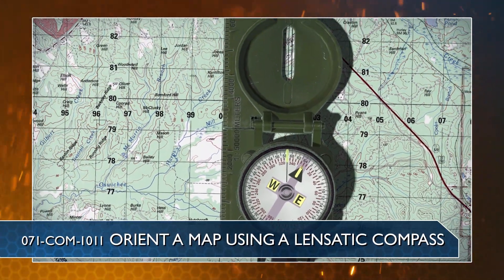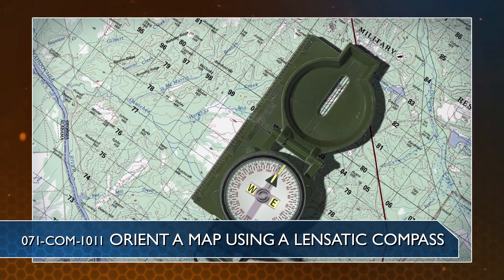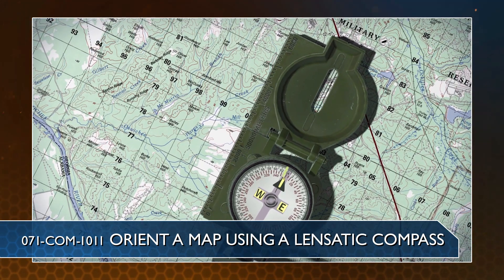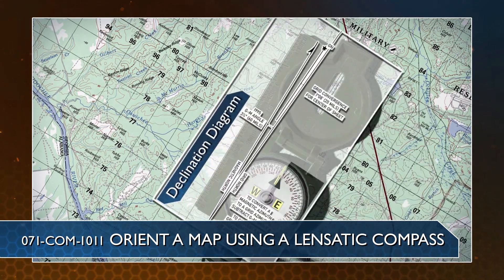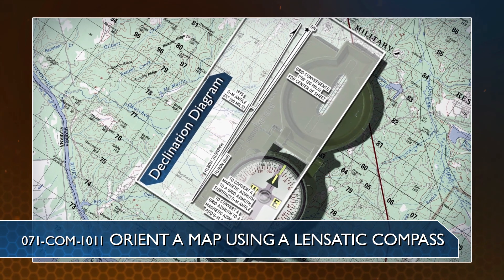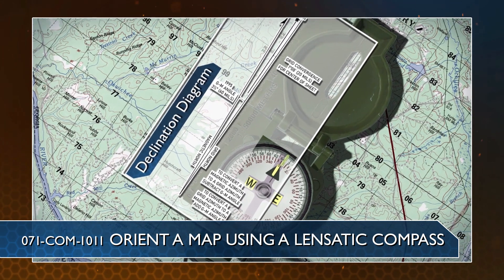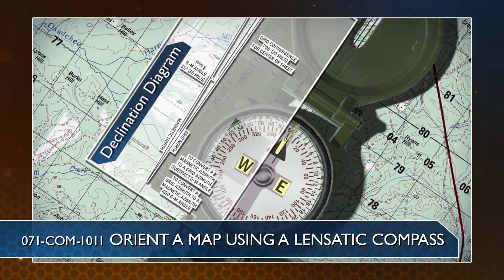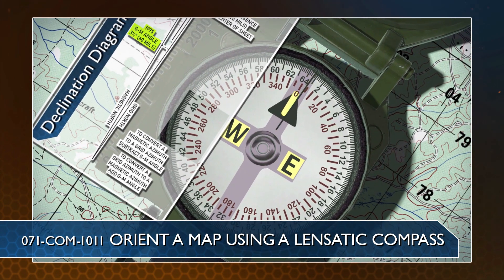To orient your map using a compass, align the magnetic arrow, which always points north, to the declination diagram on the map. For a complete explanation of this procedure, refer to task: Orient a Map Using a Lensatic Compass.